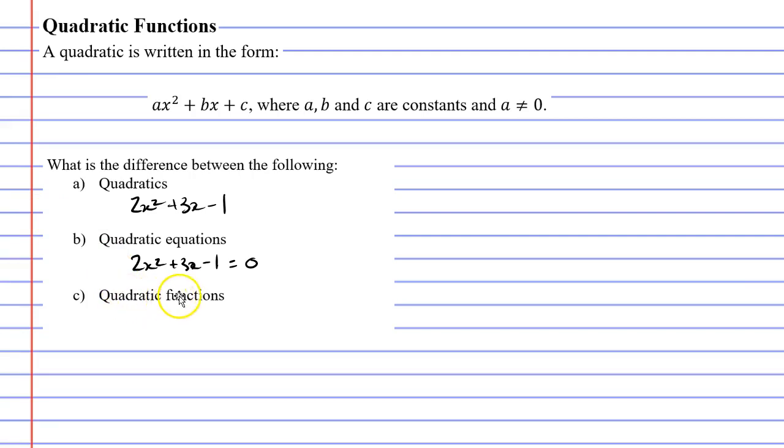A quadratic function also has the equal sign, but rather than equaling zero, it will have something like this: f of x equals 2x squared plus 3x minus 1. Now just because it's a function doesn't mean it has to be in function notation. I also could have written this function as y equals 2x squared plus 3x minus 1.